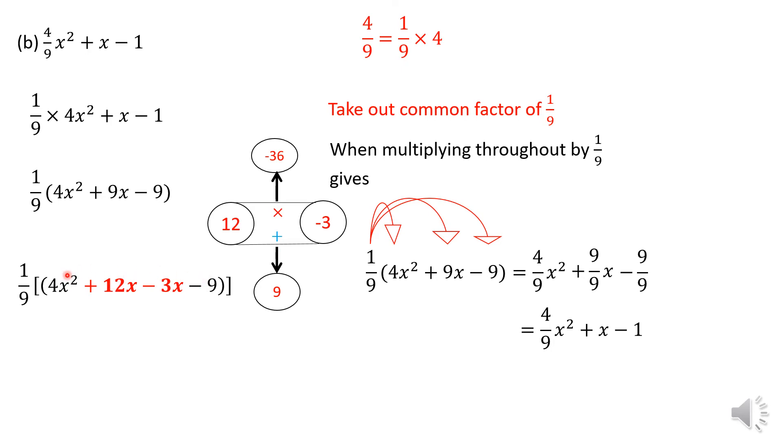It's just that I wrote the 12 before the 3 because the 4 and the 12 can go nicely when I factorize them in pairs. So once you factorize in the bracket you get 4x as a common factor for these two terms and minus 3 as a common factor for the last two terms. So effectively your job now is done. So the final answer is 1 upon 9 multiplied by the quantity 4x minus 3 multiplied by the quantity x plus 3.